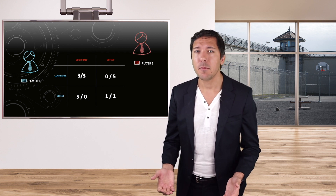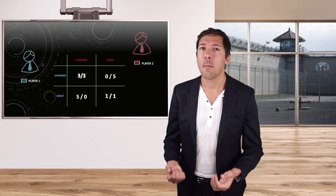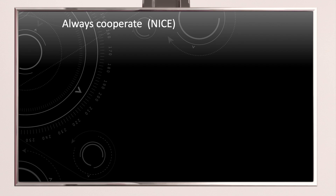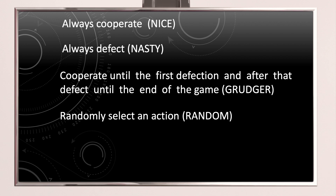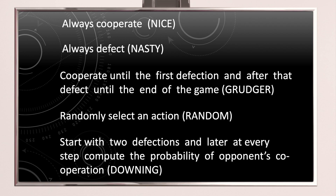To play in a repeated game, you need a strategy — basically, how you want to play based on your previous moves and your opponent's previous moves. Examples of strategies include: always cooperate (a nice strategy); always defect (a nasty strategy); cooperate until the first defection, then defect until the end of the game (a gradual strategy); randomly select an action (the random strategy); and complex strategies like Downing, which begins with two defections and later computes the probability of the opponent's cooperation at every step.